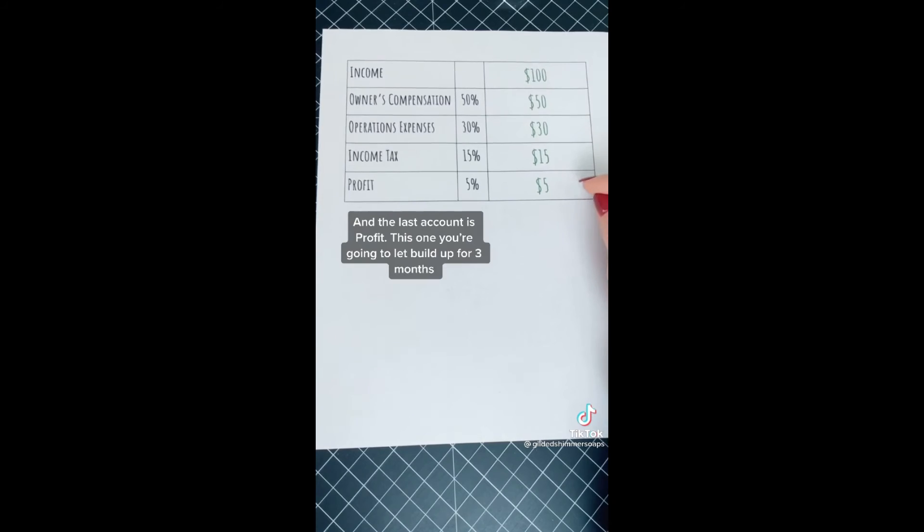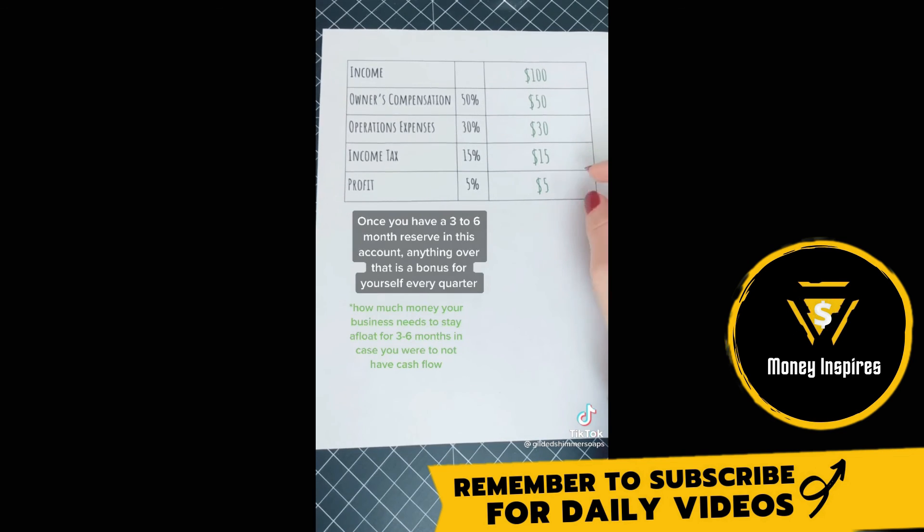And then the last account is profit. This one you're going to let build up for three months, and so every quarter you're going to take half that money and give it to yourself as a bonus, and the other half is going to stay in here as an emergency fund. Once you have a three to six month reserve in this account, anything over that is just a bonus for yourself every quarter.